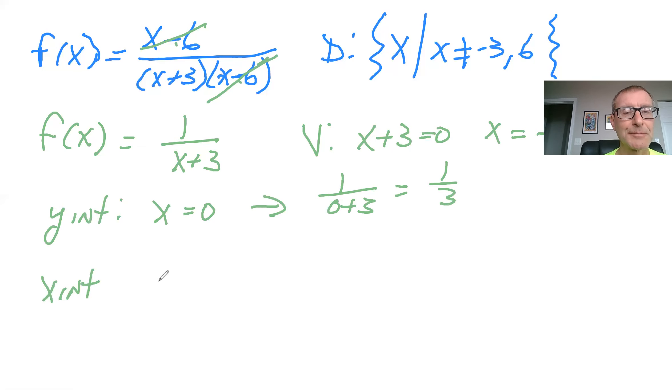What about the X intercept? That one's a little bit trickier because that's when Y equals 0. And so remember, the only way to get a fraction to be 0 is the numerator, right? What's on top has to be 0. And so in this case, there's no variable up there, right? It's just the number 1. So in this case, there are no X intercepts.